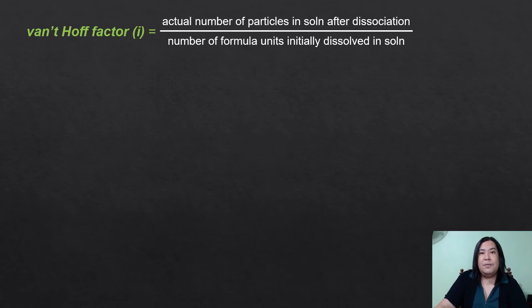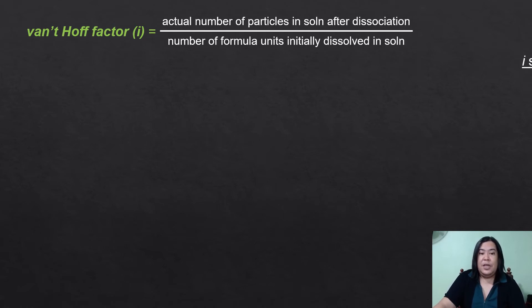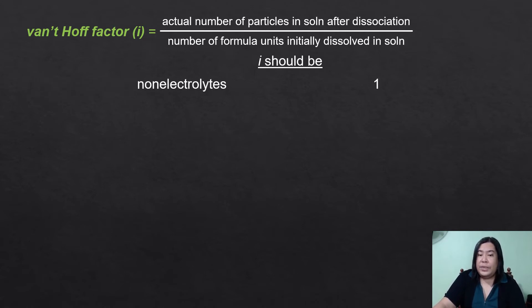So what is the Van't Hoff factor? The Van't Hoff factor is mathematically expressed as the actual number of particles in a solution after dissociation — that is, when a solid substance is added to a solvent and completely dissolves, it dissociates into its component ions — divided by the number of formula units initially dissolved in the solution. In a non-electrolyte solution, the i value should always be 1.